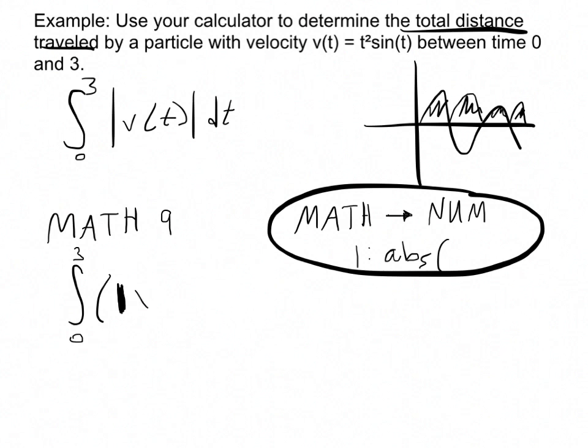Then we put in x squared sine x, and it'll close the absolute value for dx. If you throw all of that at your calculator and hit enter, it'll come up with the answer: 5.777. And that's our answer for that one.